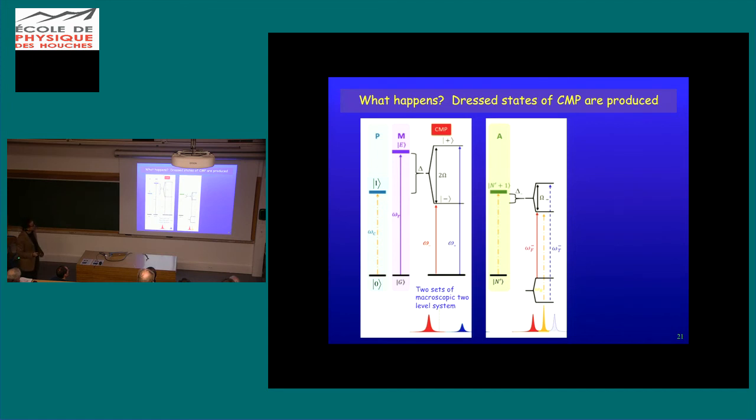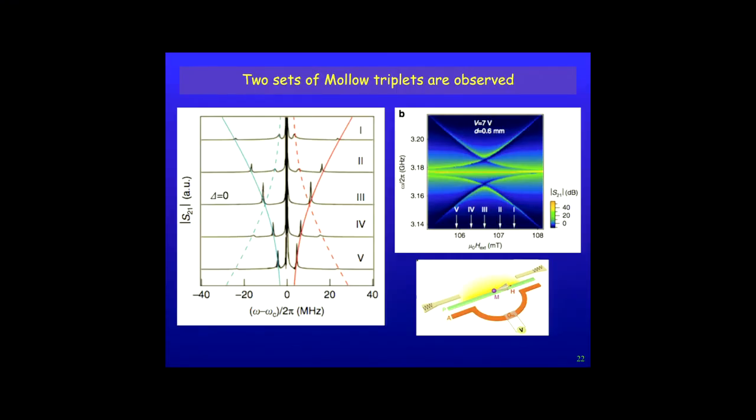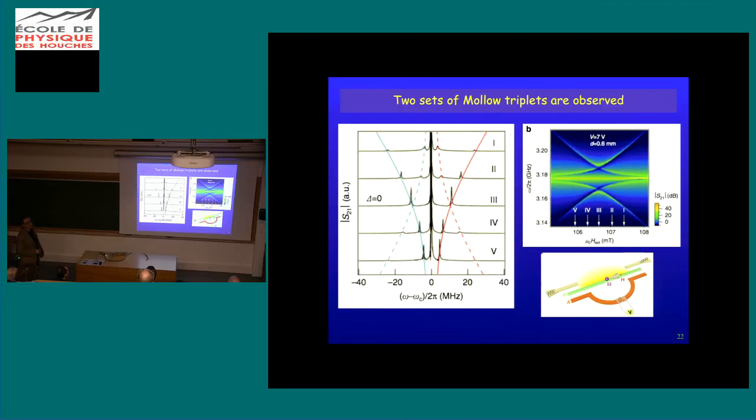In this case, it would be the dressed states of polariton. And there is a second set of the two-level system. So you expect to see a second set of Mollow triplet, which is the second set of the dressed states. And then we do the experiment. And indeed, you can wonderfully see, now you no longer have this relatively boring twin polaritons. If you switch on your gain, feed the photons back, depending on the feedback gain you have, you actually very clearly see one set of Mollow triplet, and there is another set of Mollow triplet, and they evolve in a different way.